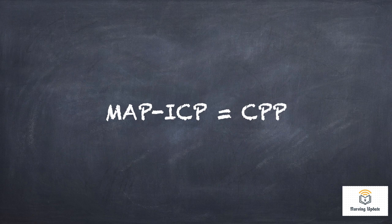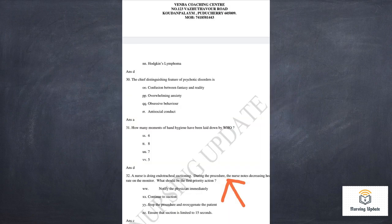MAP, ICP, and CPP calculation — question number 32. A nurse is doing endotracheal suctioning and notices a decreasing heart rate. The correct action is to stop the procedure and re-oxygenate the patient.